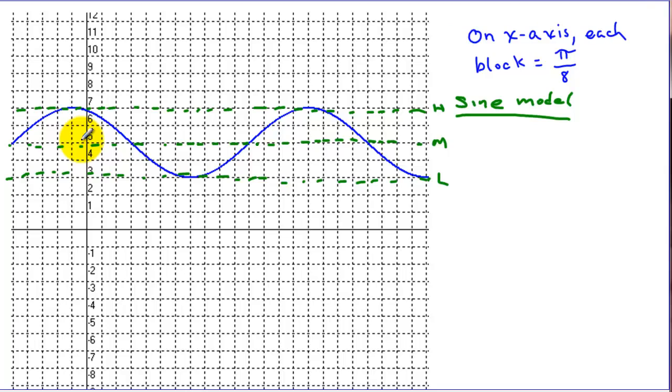The sine function starts on the midline, so we have to pick a starting point. I'm going to pick the closest place where the graph crosses the midline, closest to the y-axis, so this point will be our starting point. To find the period, we go one complete pattern, which would end here. This will be our endpoint.